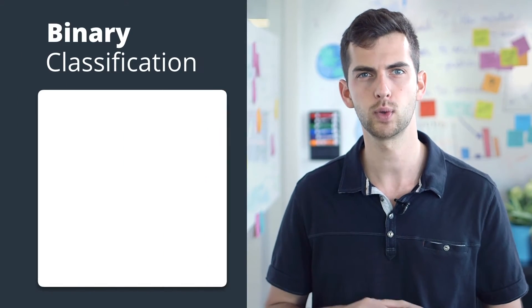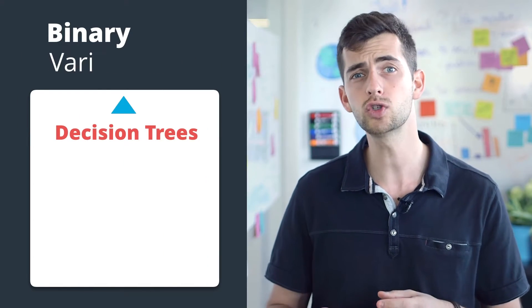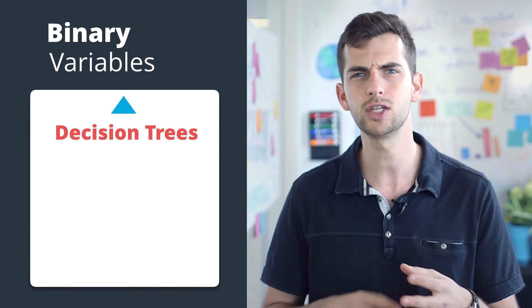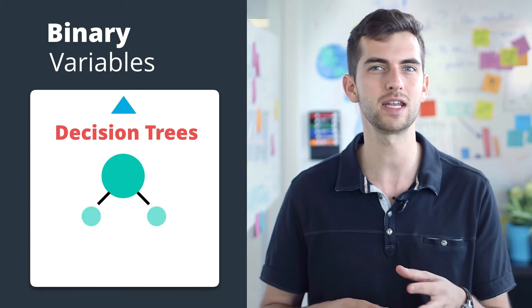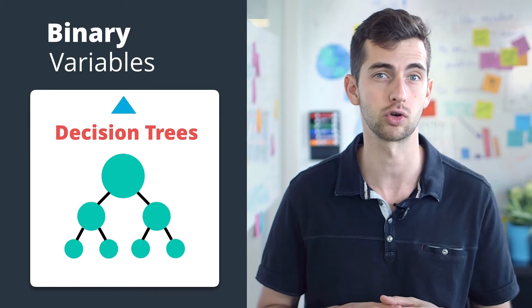In the binary classification section, we learned about decision trees, which were used to predict binary variables. They do this by splitting the data and creating the largest difference of the percent between the target group.